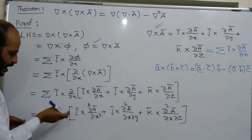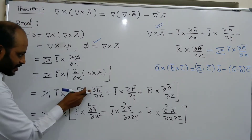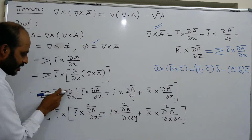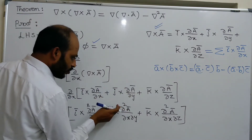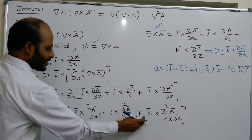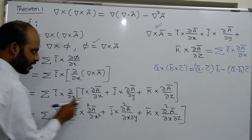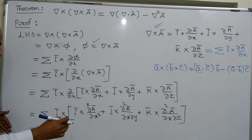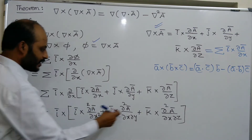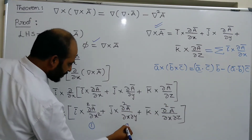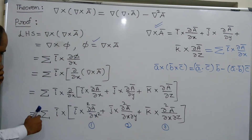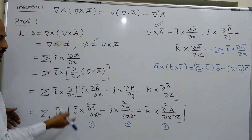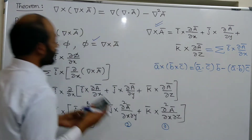Differentiating term by term: I-bar cross dou squared A-bar by dou x squared, plus J-bar cross dou squared A-bar by dou x dou y, plus K-bar cross dou squared A-bar by dou x dou z. Now split these terms — i-bar has a cross product with these three terms. We need to compute the vector cross product term by term.